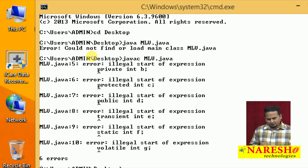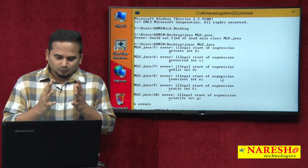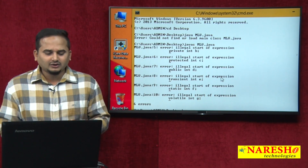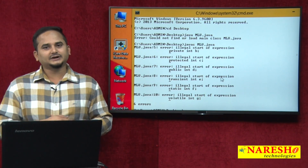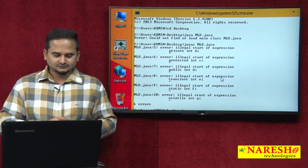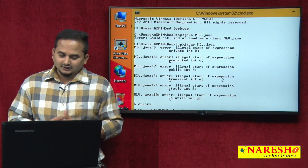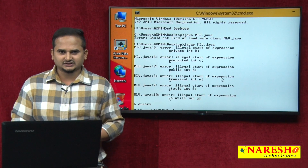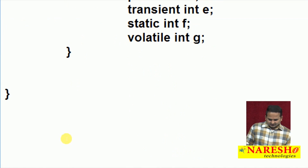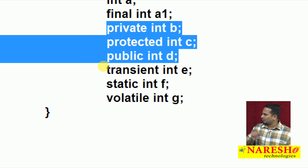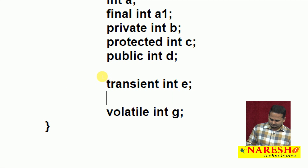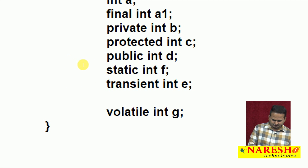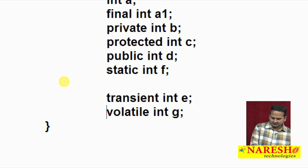The errors are under private, protected, public, transient, static, and volatile. So what is the meaning of this? We cannot apply all these 6 modifiers on top of local variables. Especially in this video, I am only concentrating on these 3 modifiers. In the coming video, I will highlight transient, and I am also discussing static here. Transient and volatile we will see separately.